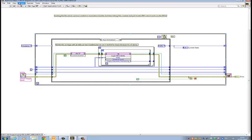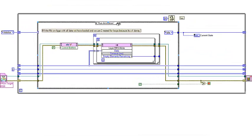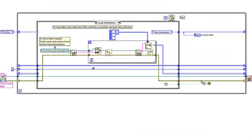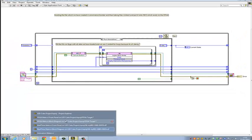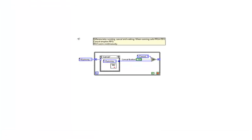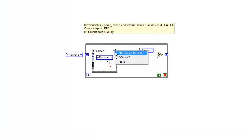I then have the real time main VI, which loads files created from our animation maker VI, takes the content and puts it onto the FIFO which exists on the FPGA. On the FPGA, the FPGA main VI differentiates running, cancel and waiting states. Running state calls the FPGA FIFO, cancel empties the FIFO and idle runs continuously.